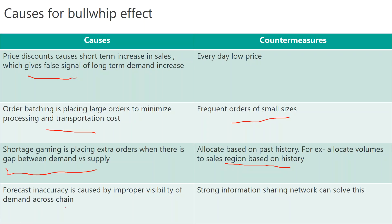The last cause is forecast inaccuracy, caused by improper visibility of demand across the supply chain — essentially, no information sharing or very limited information sharing. Information is the backbone of the supply chain. From manufacturer to retailer, all partners need a very strong, on-time, and accurate information-sharing system. Without it, everyone runs behind their own objectives and cannot work toward a common goal. Information sharing is one of the most important aspects of controlling demand fluctuations.